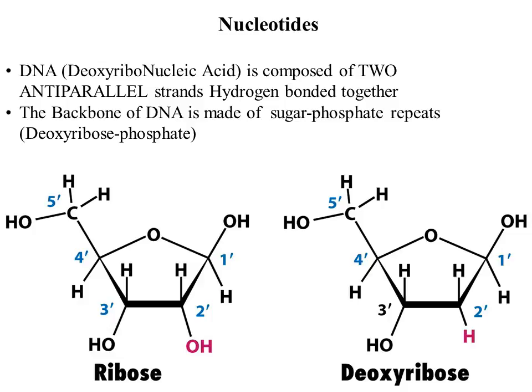DNA is called deoxyribonucleic acid because carbon number two lacks that hydroxyl group — hence it doesn't have the oxy, deoxyribonucleic acid. Also notice that ribose carbons are numbered as one prime, two prime, three prime, four prime, and five prime. So RNA uses ribose and DNA uses deoxyribose.